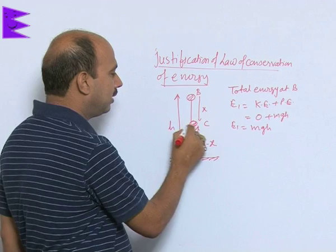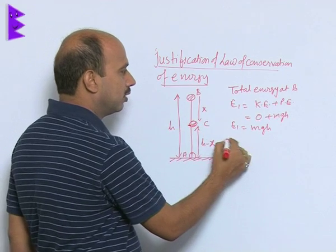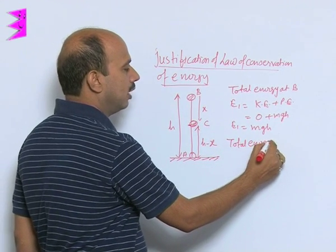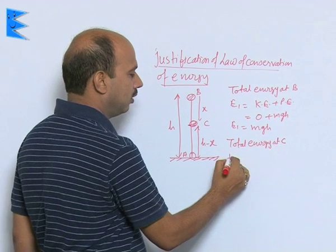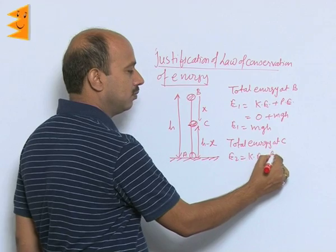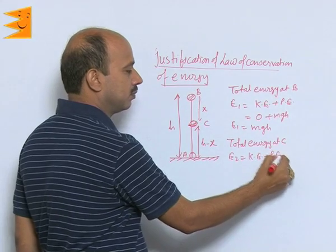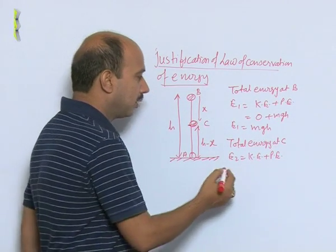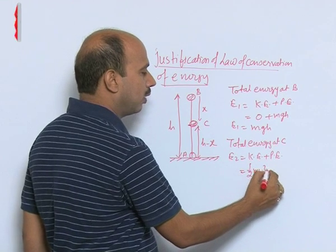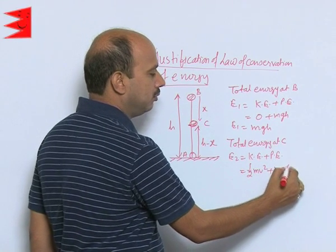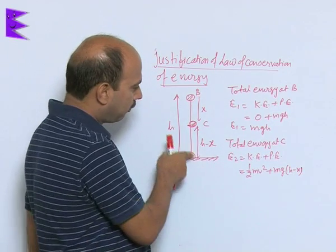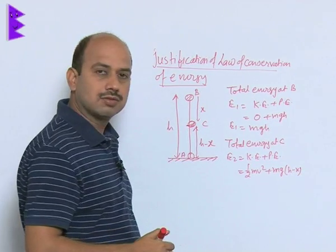Now see the total energy at C. Total energy at C is E2, equal to kinetic plus potential. At C, E2 equals half mv squared plus potential energy mg(h minus x), because the height from the ground is h minus x.